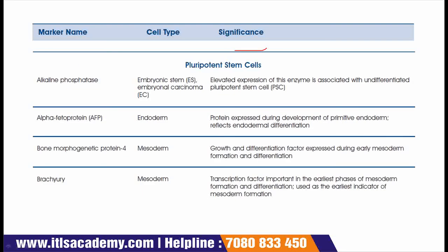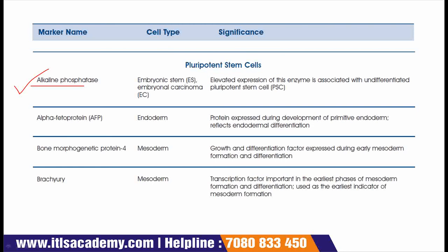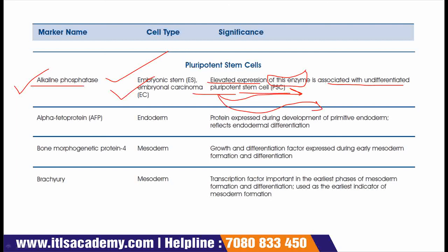Now we are going to see pluripotent stem cell markers. The first marker is alkaline phosphatase, which is present on embryonic stem cells and embryonal carcinoma cells. Its elevated expression is associated with undifferentiated pluripotent stem cells. After differentiation they develop into various kinds of cells, so these markers are responsible for identification before differentiation.